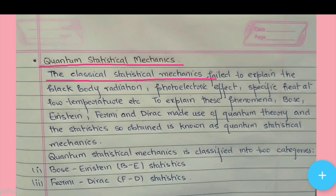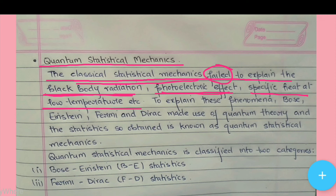However, classical statistical mechanics failed to explain black body radiation, the photoelectric effect, and specific heat at low temperatures.